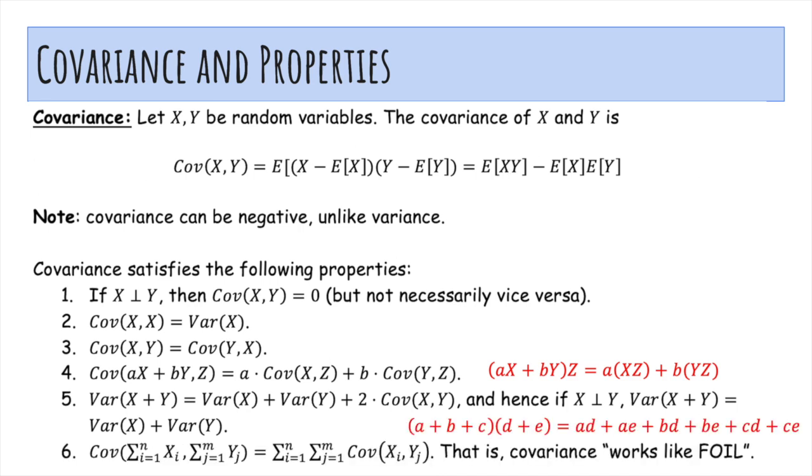And this messy thing just says the covariance of a sum with another sum is just the double sum of the covariance of each pair. That is, covariance works like FOIL. So basically it says if you have a plus b plus c times d plus e, you just get every single possible pair here.